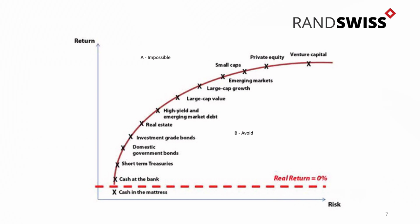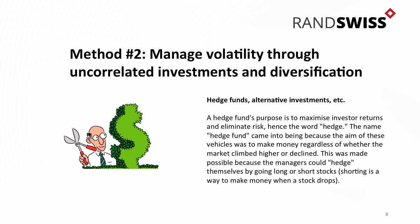What we were talking about before is cash in the bank at 7% - cash under the mattress, you're actually just losing money. Just remember, on this curve, there's no such thing as a high return, low risk investment. It just doesn't exist. Plenty of people will tell you about them, but they're probably more sitting in the high risk, lower return category. So if we look at the second way to manage volatility - the second way is through diversification and building a portfolio of uncorrelated assets.